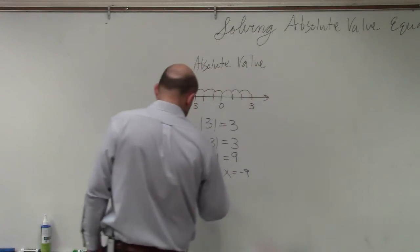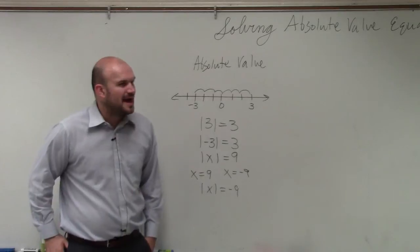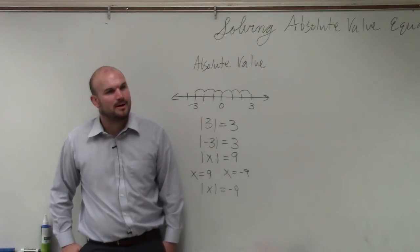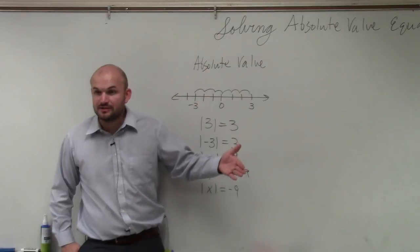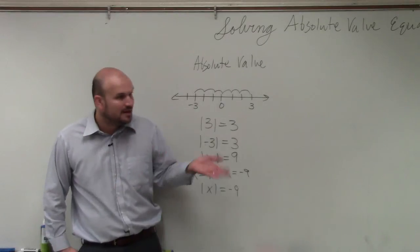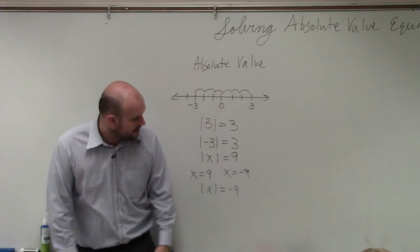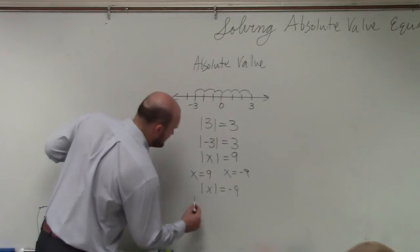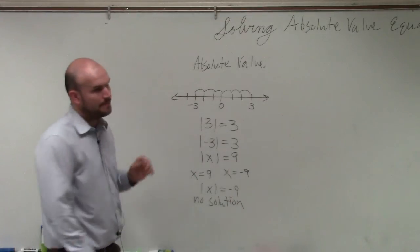And then the last one we'll need to discuss before we get into a problem. What about the absolute value of a negative? Can we have the absolute value be negative? You can't go a negative distance, right, exactly. You can go a negative direction, but you always go a positive distance. No matter what direction you go, you still went somewhere. So any time you have an absolute value equal to a negative number, we call that no solution.